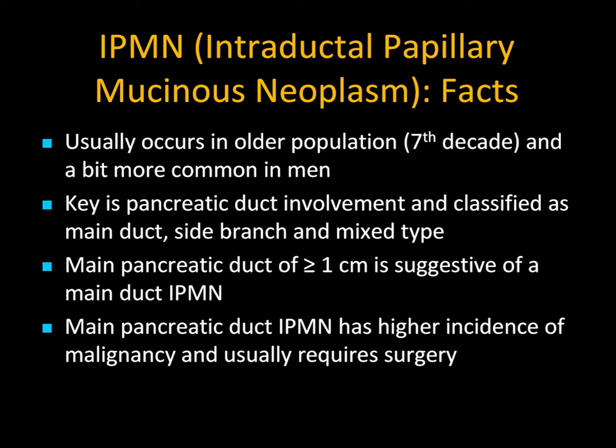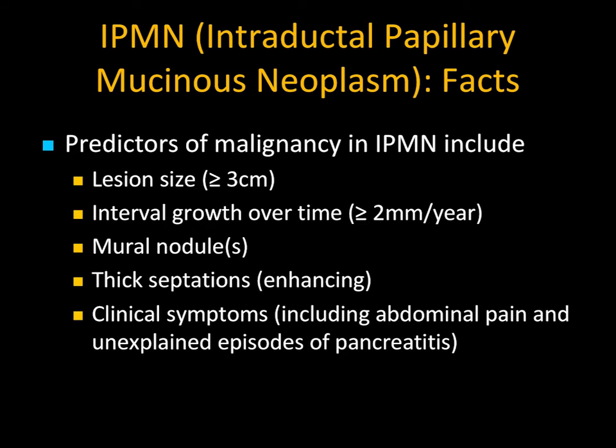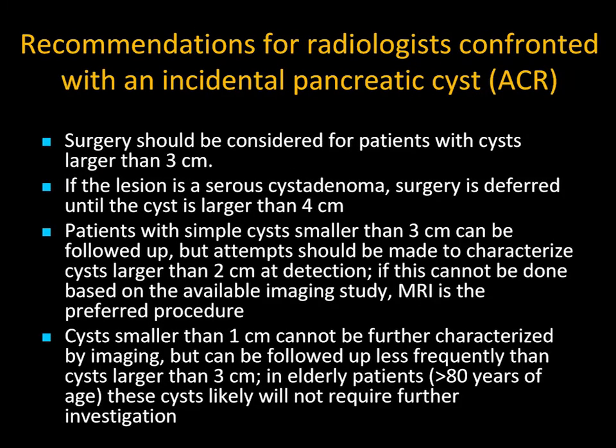A pancreatic duct of 1cm is essentially always a main duct IPMN. Over 7mm, we'll do EUS. For predicting malignancy in an IPMN: size over 3cm, interval growth over 2mm per year, mural nodules (particularly solid enhancing ones), thick enhancing septations, and clinical symptoms. If a patient has abdominal pain, that cystic lesion is going to be sampled or resected.